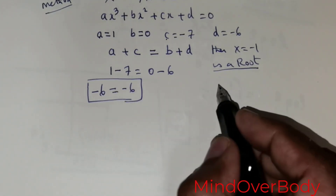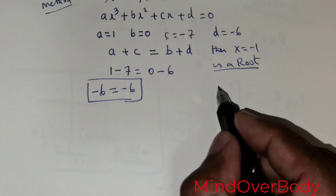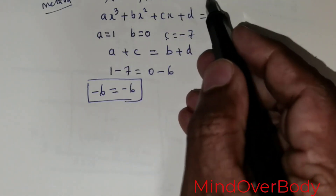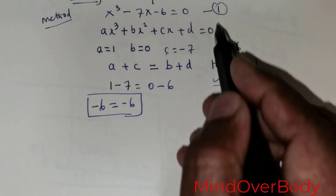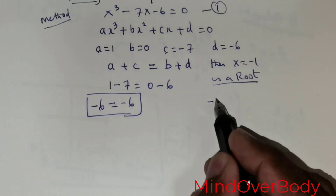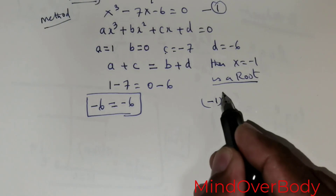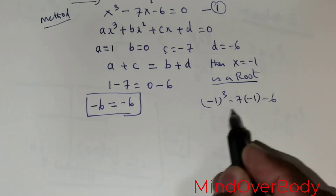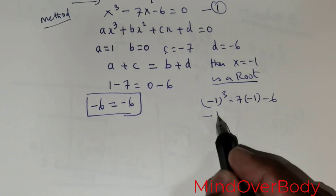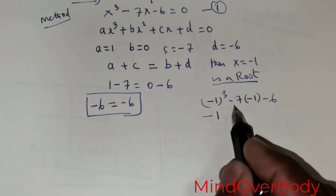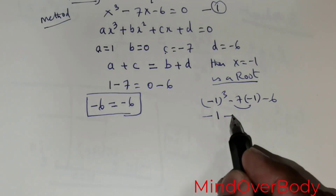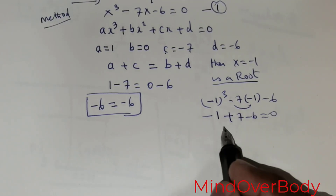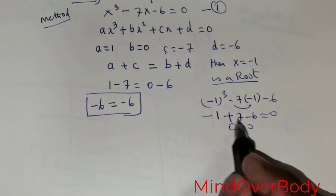You can verify by substituting x equals negative 1 into the equation. Negative 1 cubed minus 7 times negative 1 minus 6 gives negative 1 plus 7 minus 6, which equals 0. So we confirm 0 equals 0.